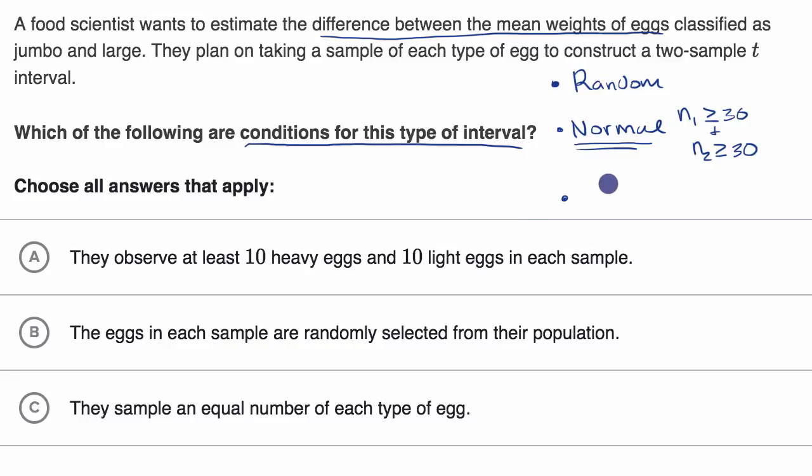And then the third condition, which we see whether we're dealing with means, proportions, differences of means, or differences of proportions, is the independence condition. This is the idea that either your individual observations are done with replacement in both samples, or that the sample size for both samples is no more than 10% of the population, then you have met this condition.